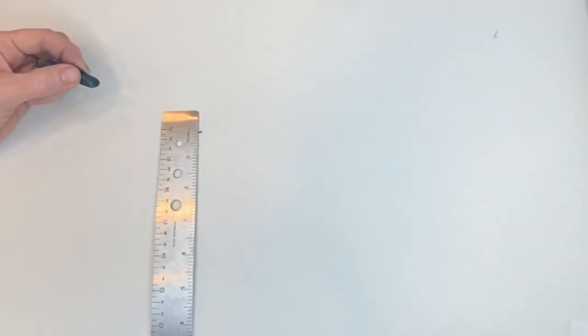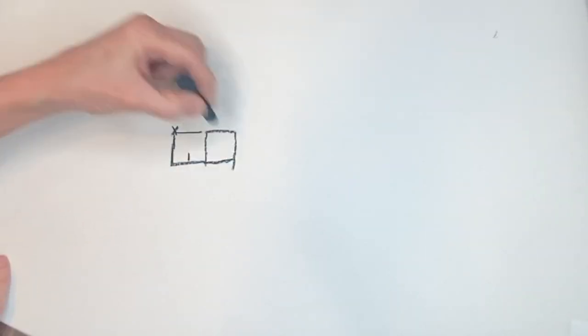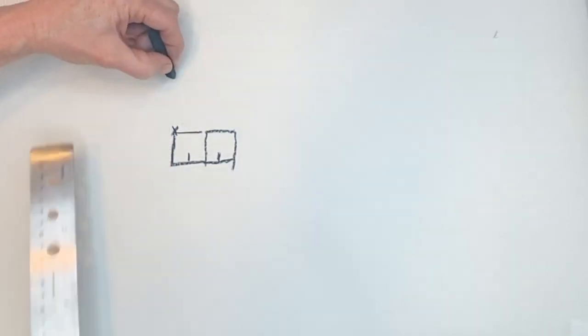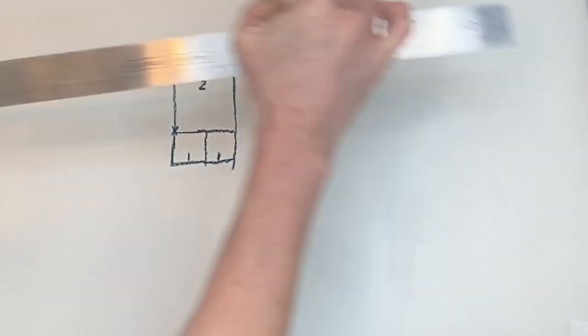All you need really is a piece of paper, something to mark with, and a ruler. Basically make a one inch by one inch square and put a one inch by one inch square adjacent to it. Then we will continue to add squares to the previous squares.